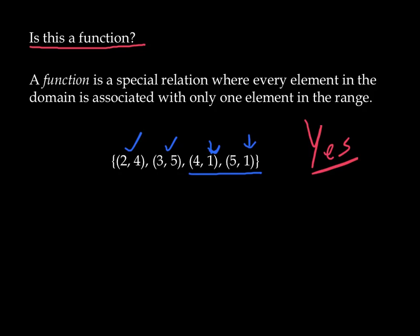Because if I input the value of four, the only result I get is one. And if I input the value of five, the only result I get is one. In other words, for each element in the domain, four and five, there is only one associated element in the range.